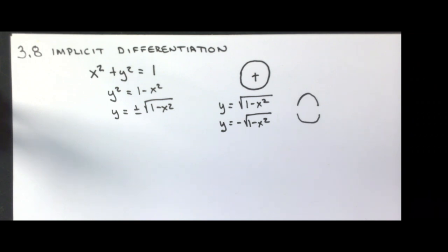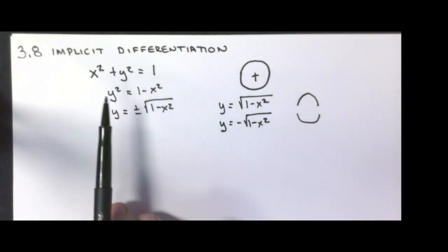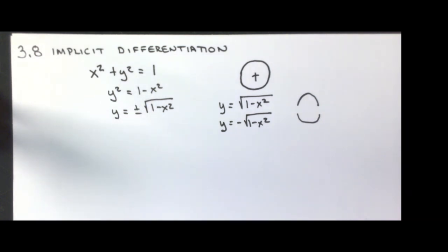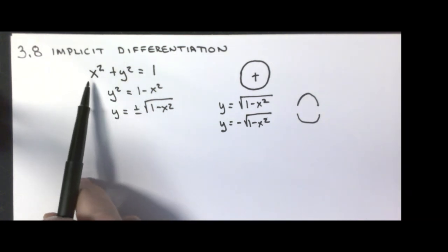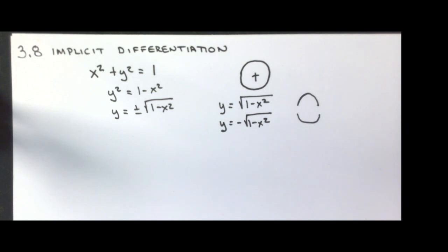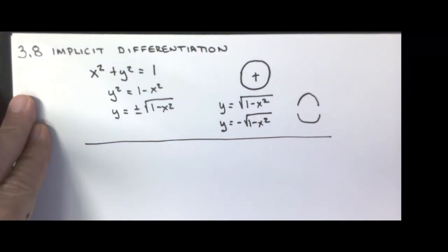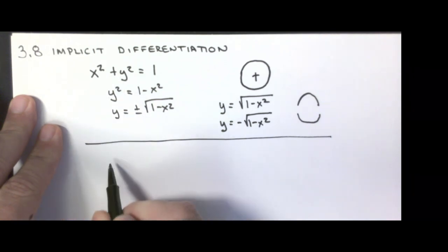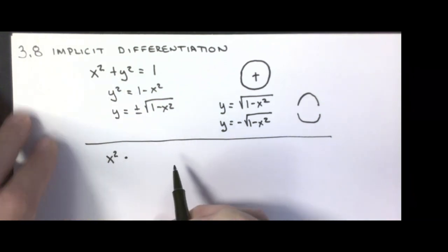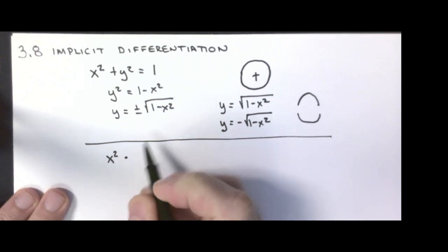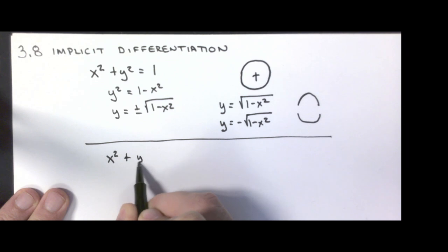Sometimes it's easier for us, instead of doing the algebraic manipulation, to do the differentiation in the original form. So far, all we've done is differentiating on one variable — for example, x or t — that's the only variable in the function. What we're going to do is use the chain rule from our last lecture. I'm going to rewrite that as x squared plus y squared equals 1, and we're going to think about taking the derivative of everything.